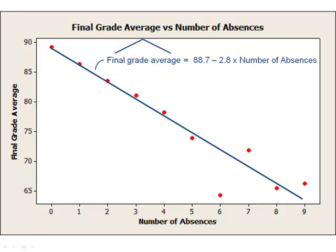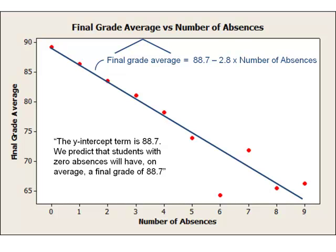Now let's think about our test score data. The regression equation is: predicted final grade average equals 88.7 minus 2.8 times the number of absences. The intercept is 88.7, meaning the model predicts a student's final grade average will be 88.7 if she had zero absences. Is zero a reasonable value for the number of absences? Of course it is. In fact, we have one student in our data with zero absences and others with nearly zero. So it is reasonable to interpret the y-intercept: we predict that students with zero absences will have, on average, a final grade of 88.7.